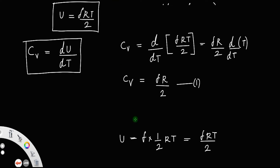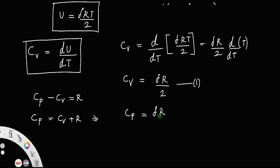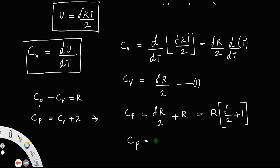When you apply Mayer's relation, Cp − Cv = R, so Cp = Cv + R. Therefore Cp = fR/2 + R = R(f/2 + 1) = R(f + 2)/2. Let us call that equation number 2.